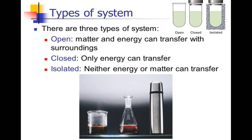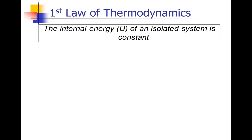This leads us to the first law of thermodynamics. If we think about an ideal thermos flask, the amount of energy in it will stay constant, because we can never take heat energy away from the flask or add energy to it. The first law of thermodynamics states that the internal energy, U, of an isolated system is constant — it will never increase or decrease. If we have an isolated system, one where energy cannot transfer into or out of it, the amount of energy in the system remains unchanged.